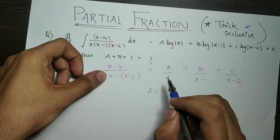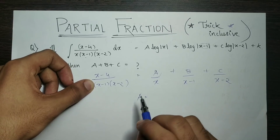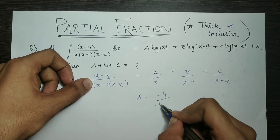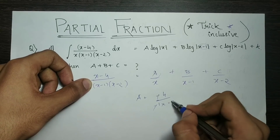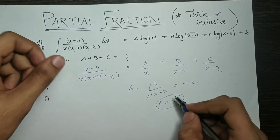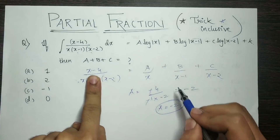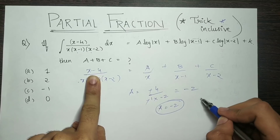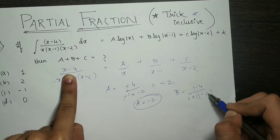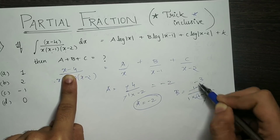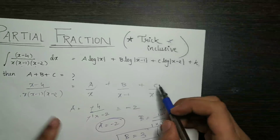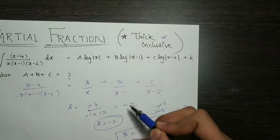Setting x equals 0: minus 4 divided by (minus 1) into (minus 2) gives 4 divided by minus 2, so a equals minus 2. Setting x equals 1: 1 minus 4 divided by 1 into (1 minus 2) gives minus 3 divided by minus 1, so b equals 3. Setting x equals 2: c equals 2.